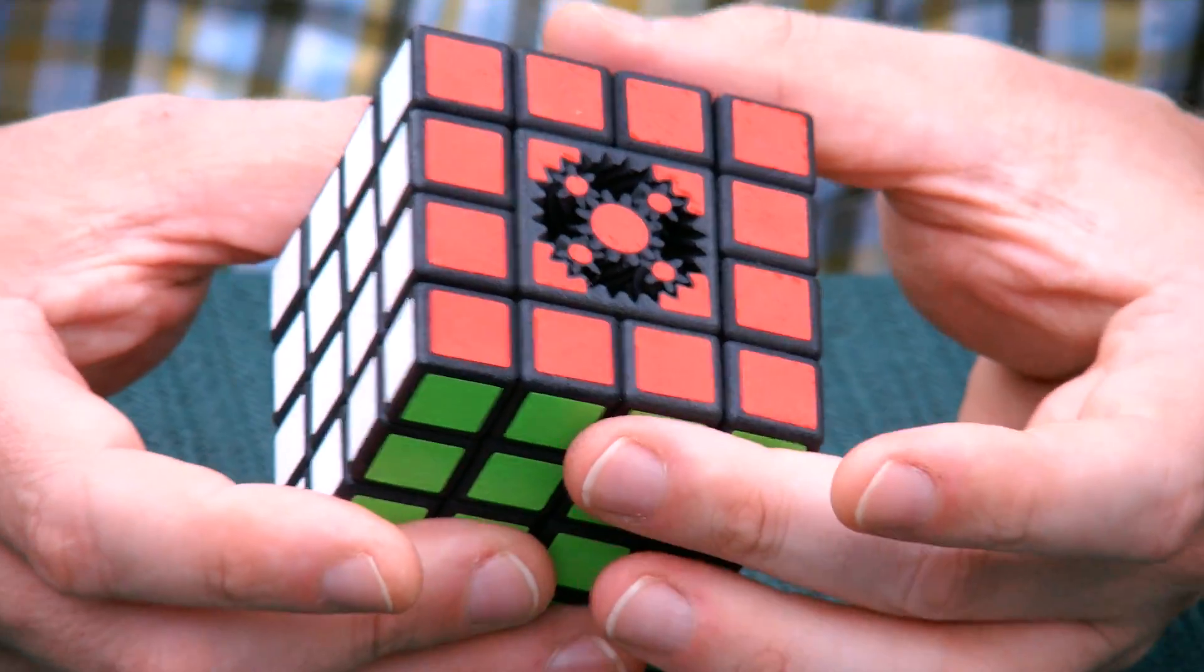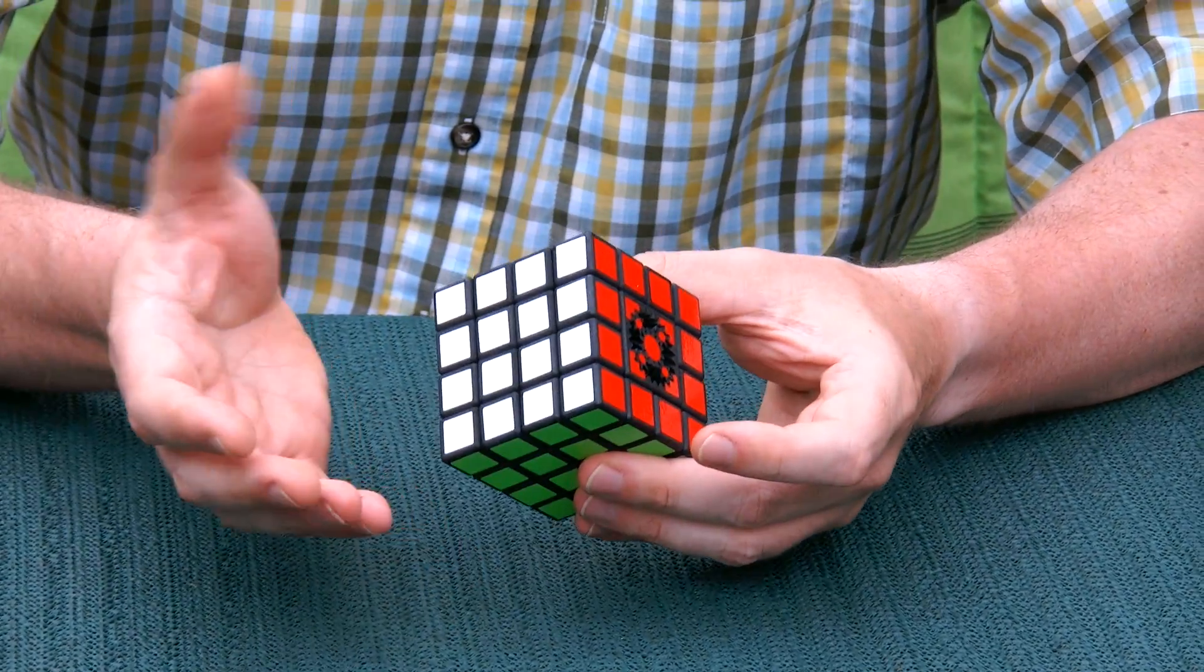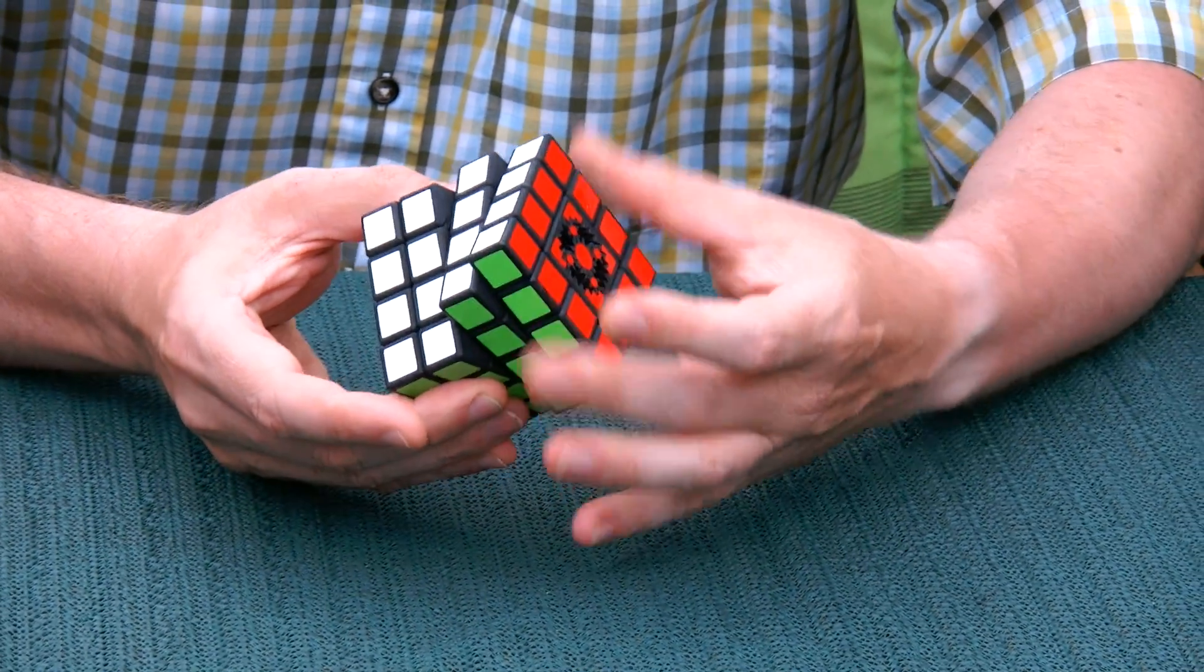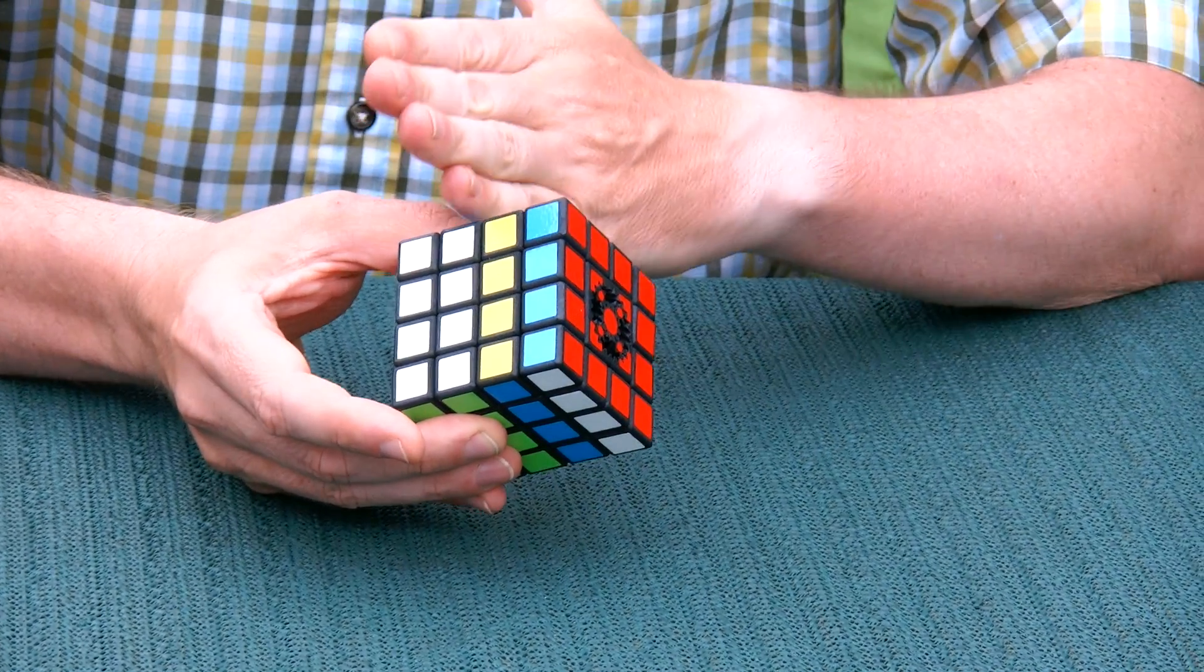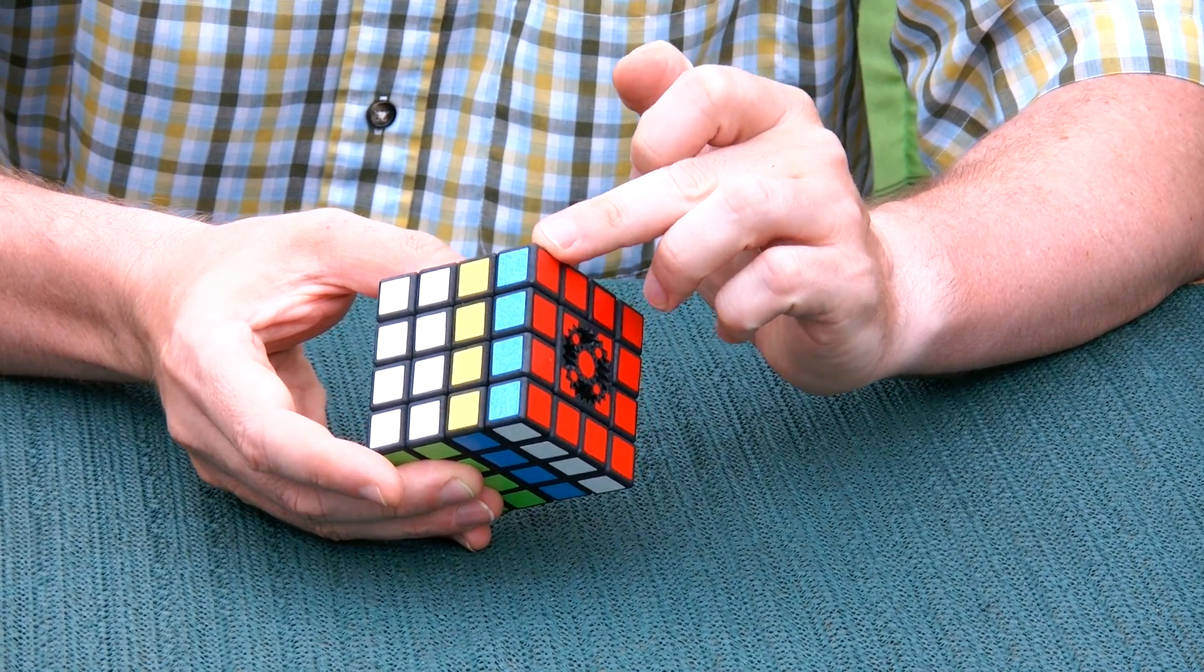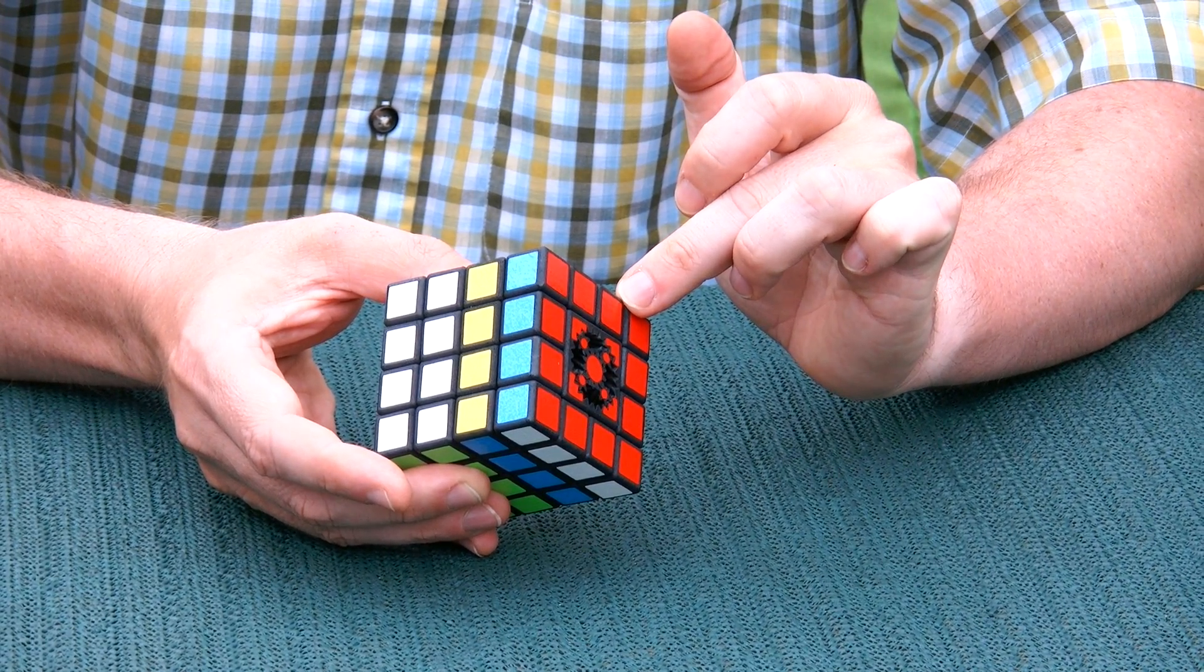And I'll show you how the gearing goes. If I keep the bottom two layers together and I'm turning the top then you see the middle slice makes 180 degrees whereas the top slice makes 270 degrees.